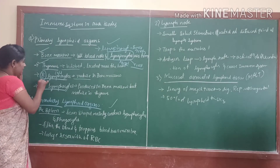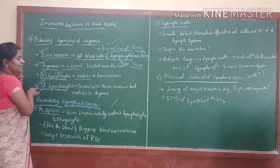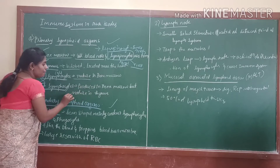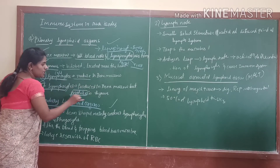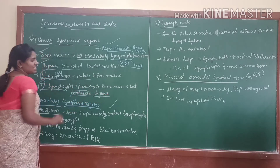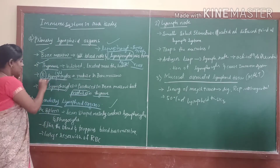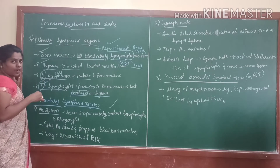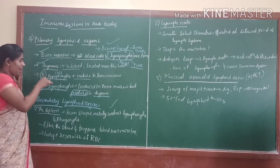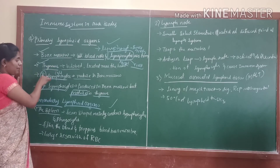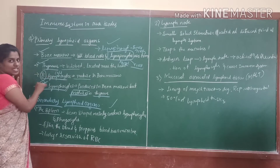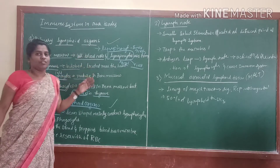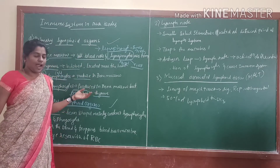And what are T cells? These T cells are produced in bone marrow but mature in the thymus. That's why it is T for thymus. Based on their maturity, they are named as B cells and T cells. These are the main important things to know about.